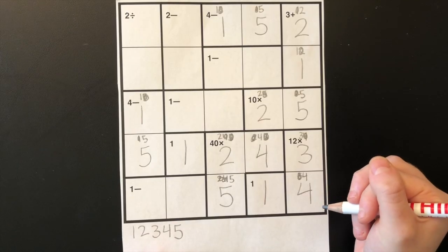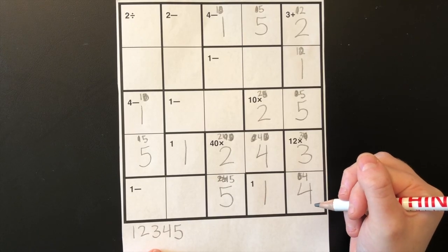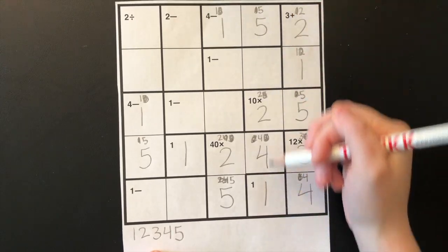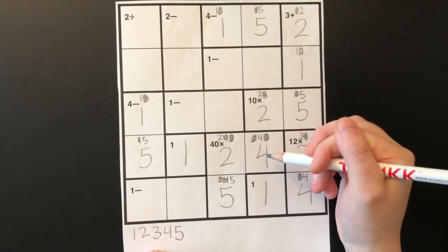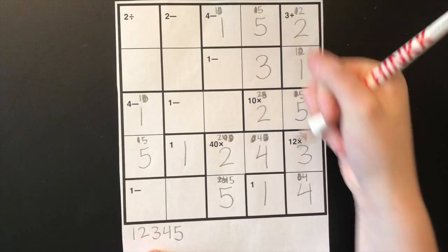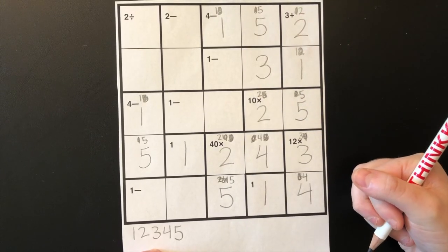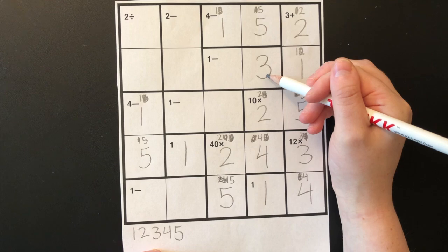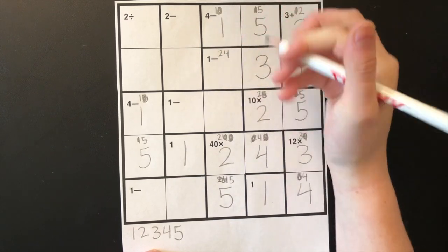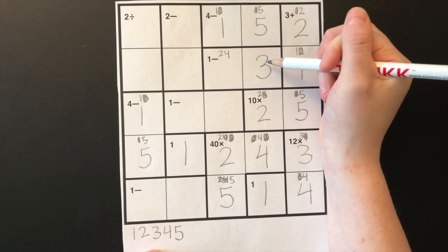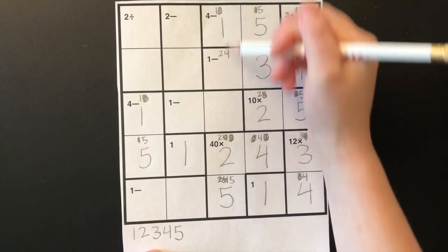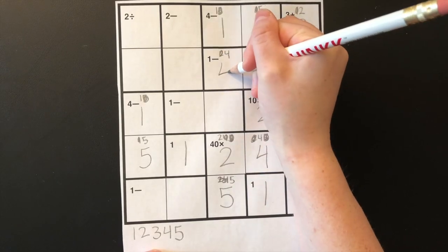Now it's time for step five: fill in the remaining cages, staying aware of the locked cages. I'm going to look at this column. I see one, two, four, and five, so this box has to be a three because all of the numbers one through five have to be in every column and row. If this is a three, then this has to be a two or a four, because four minus three equals one and three minus two equals one. There's already a two in this column, so this can't be a two, which means it must be a four.